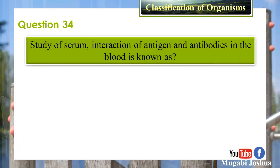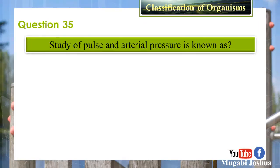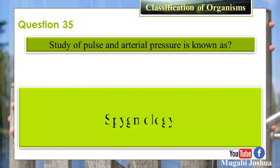Question 34: The study of cell-arm interaction of antigens and antibodies in blood is known as? Answer: Serology. Question 35: The study of pulse and arterial pressure is known as? Answer: Sphygmology.